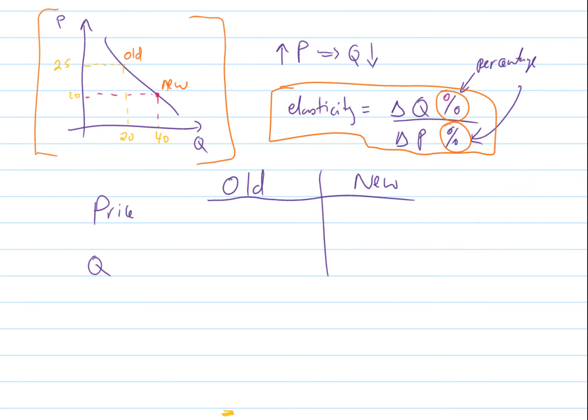Our old price was 25 and the associated quantity was 20. The new price decreased to 20, and now our new quantity has increased to 40. The inverse relationship still holds. How do we calculate elasticity?